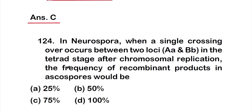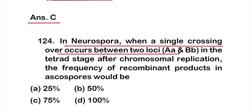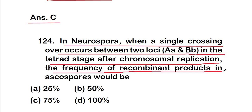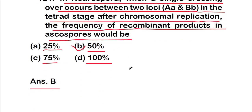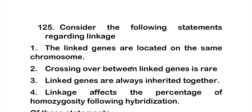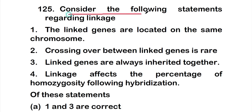Question 124: In Neurospora, when a single crossing over occurs between two loci (Aa and Bb) in the tetrad stage after chromosomal replication, the frequency of recombinant products in ascospores would be option A - 25%, option B - 50%, option C - 75%, or option D - 100%. The right answer is option B, 50%.